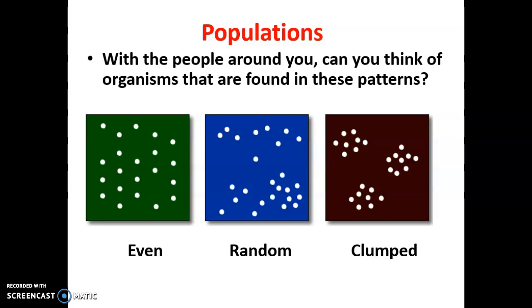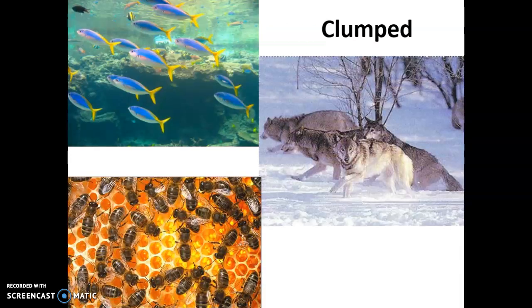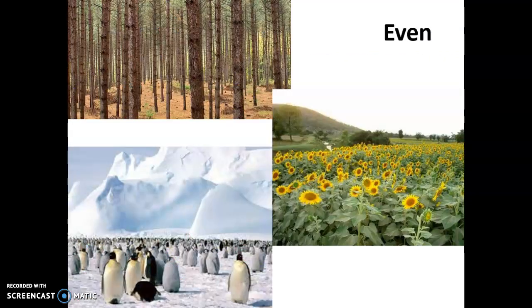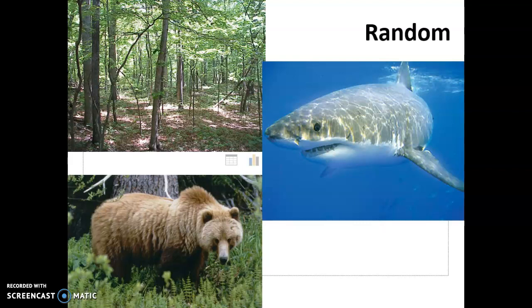Looking at specific examples: clumped dispersion includes schools of fish, packs of wolves, and hives of bees. Even dispersion includes pine or spruce trees, and anything in agriculture — corn, soybeans, or sunflowers planted in nice even rows. Penguins guarding dense nesting sites also show even dispersion. Random dispersion is seen in predator creatures like sharks and grizzly bears that need a large area to survive, and in forests with even distribution of resources.